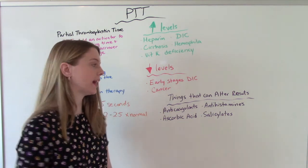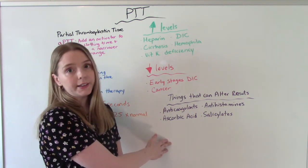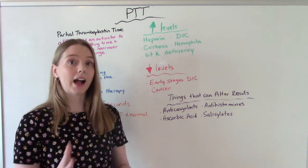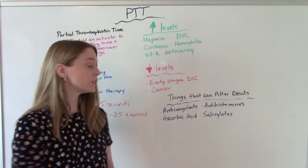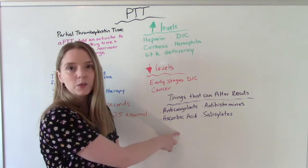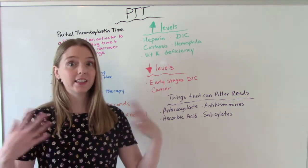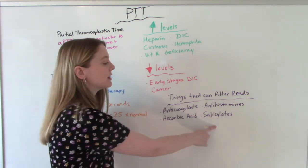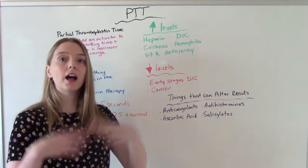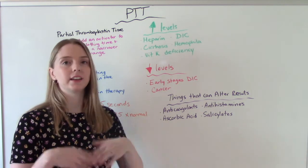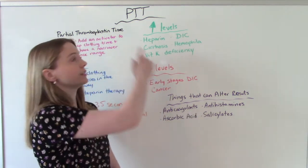There are some common medications that we give that could alter these results, so we want to keep an eye on that. These include anticoagulants, antihistamines, ascorbic acid — which is basically just vitamin C, so maybe they're taking a supplement or have a lot of it in their diet — and salicylates, a common one being aspirin, which is in a lot of pain medications. So if they're on an aspirin regimen or take pain medication every day, we want to check this because it could alter the test results.